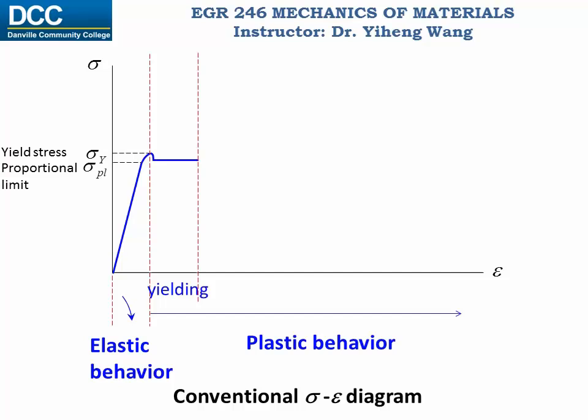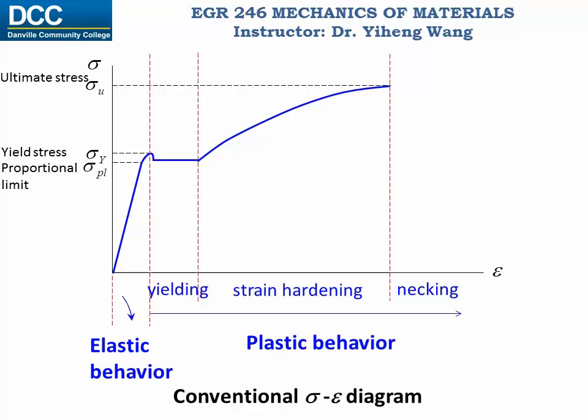After yielding ends, we can add more loading to the specimen and it will continue to deform up to a point of ultimate stress, sigma U. This period is called strain hardening. After this, necking starts to occur and the material will fail eventually at the failure stress, completing the stress-strain diagram.